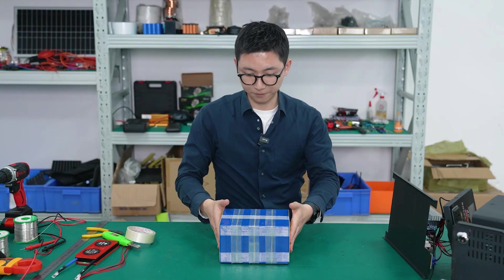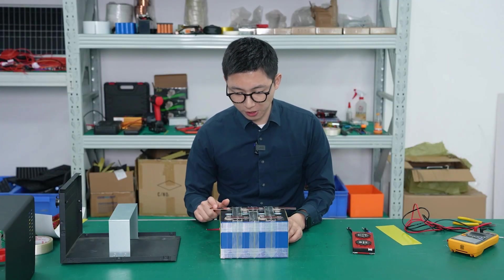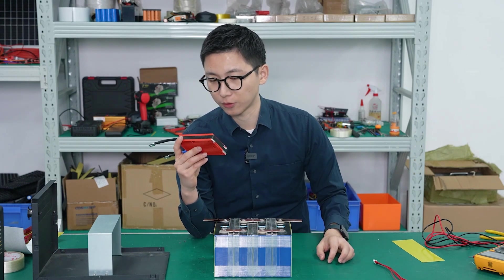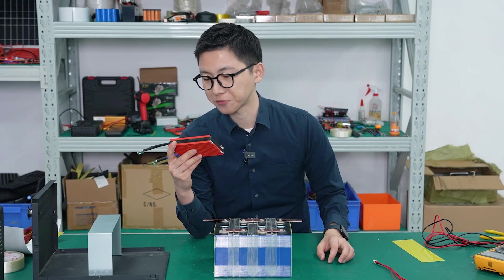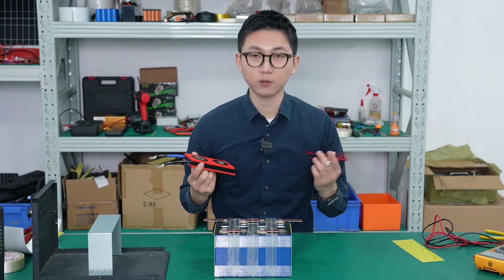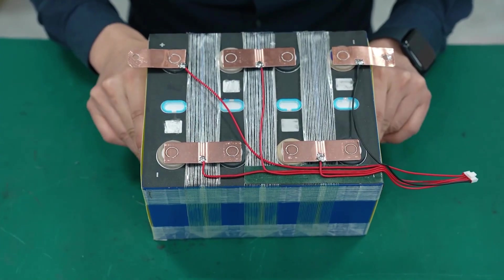And next we're going to weld it. One hour later, when we finish the welding. This is the copper sheet we made for the battery connection. This is the BMS we've prepared, and the discharge current we choose is 100A. So next we're going to weld the flat wire of the BMS to the battery. Let's do it. The flat wire has been welded.